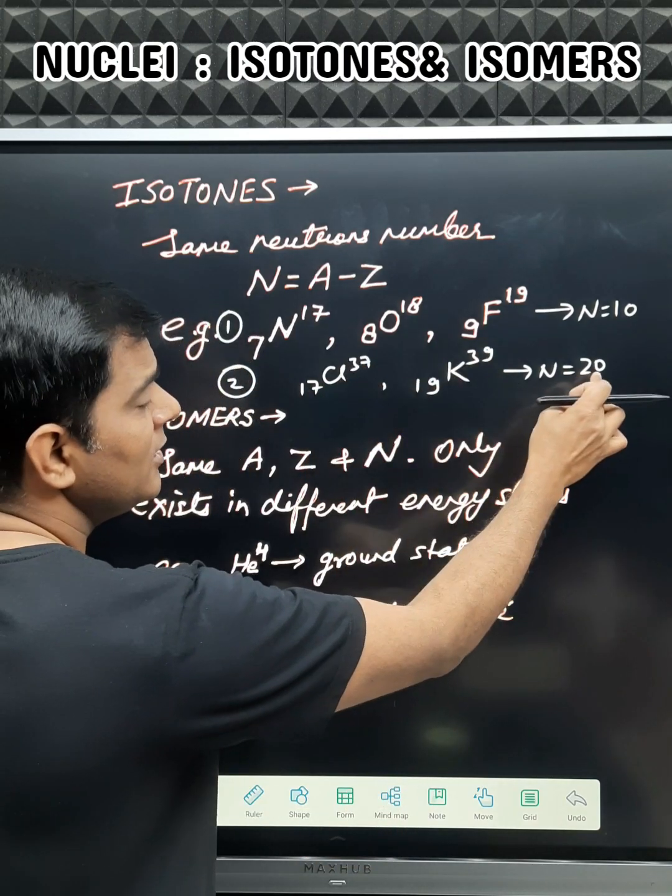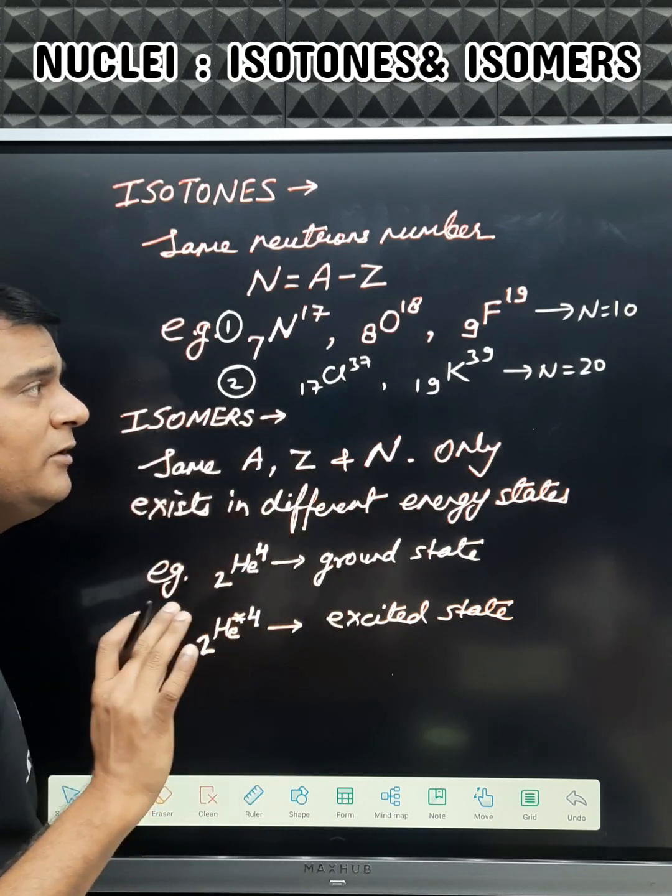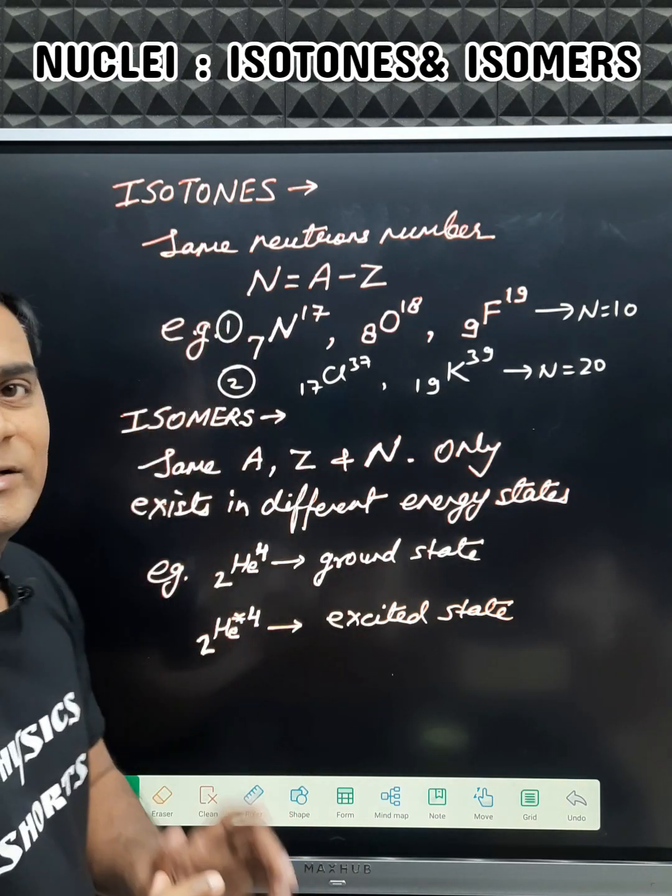The difference will be 20, so the number of neutrons in both of these nuclei will be 20 and they are also called isotones.